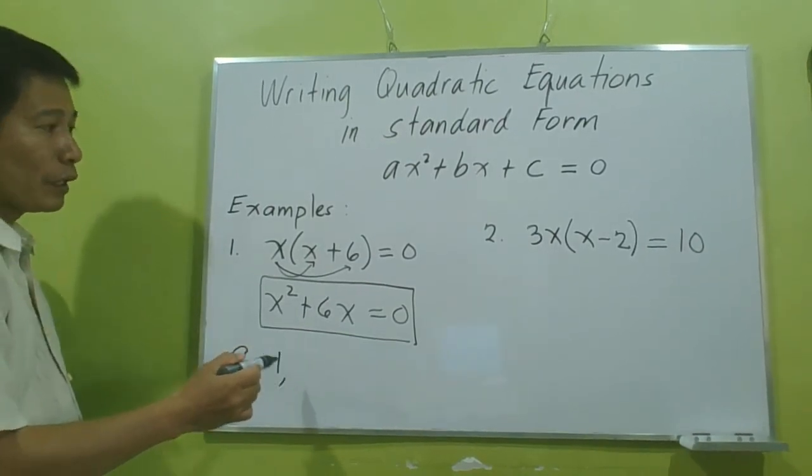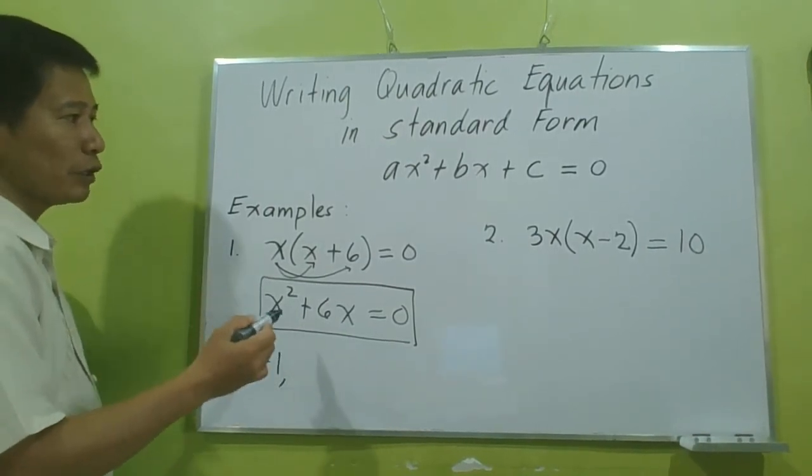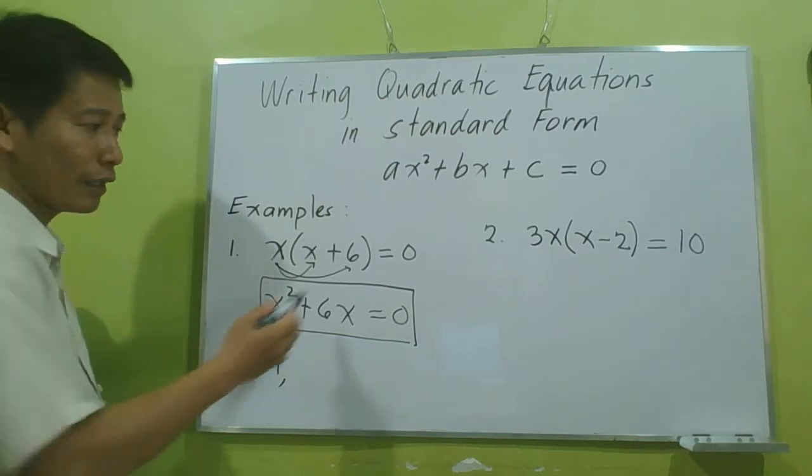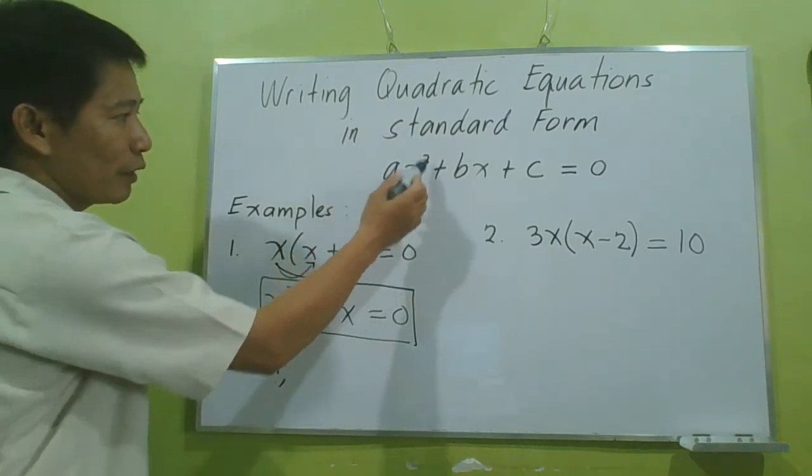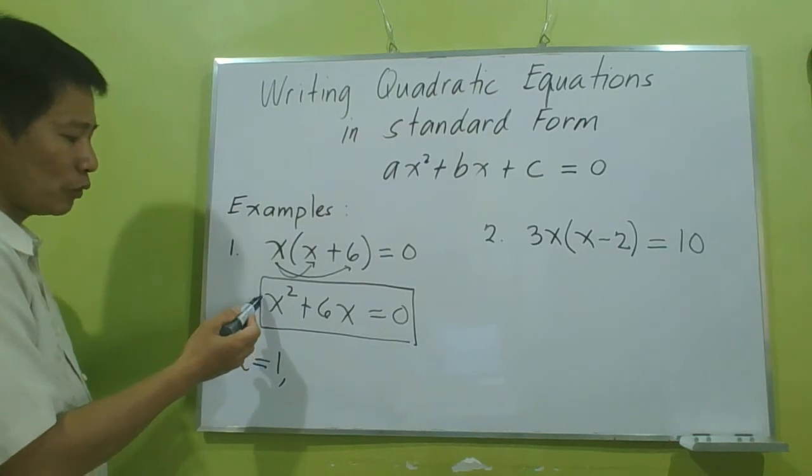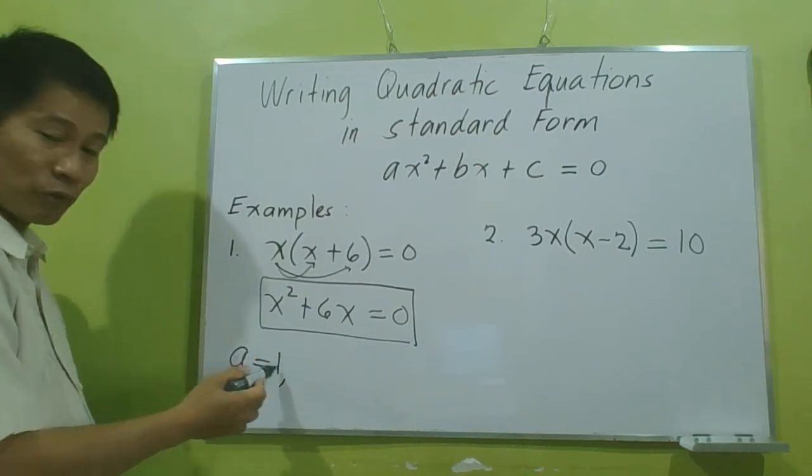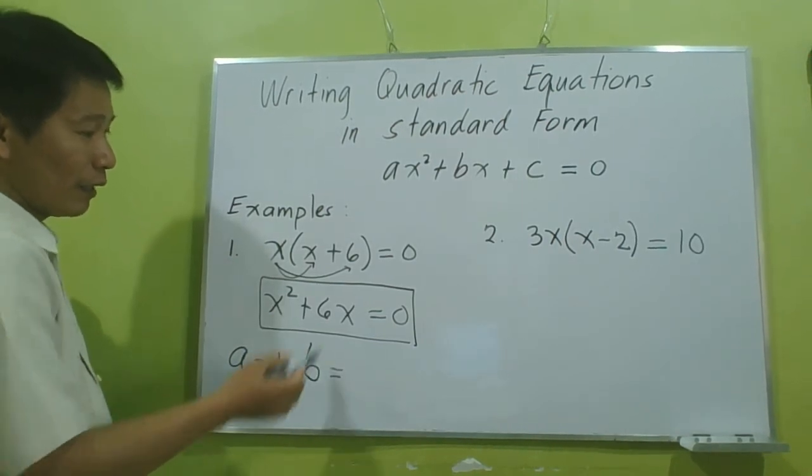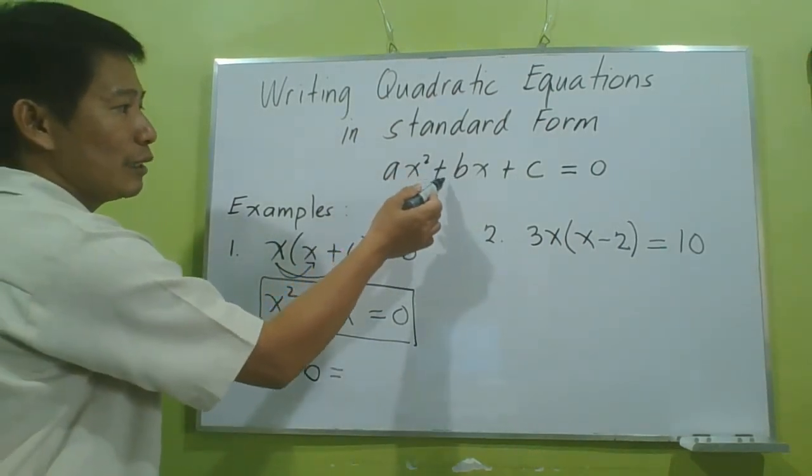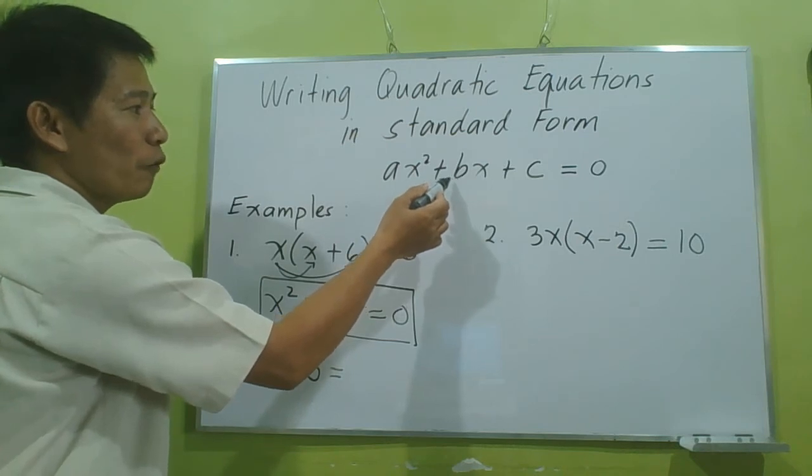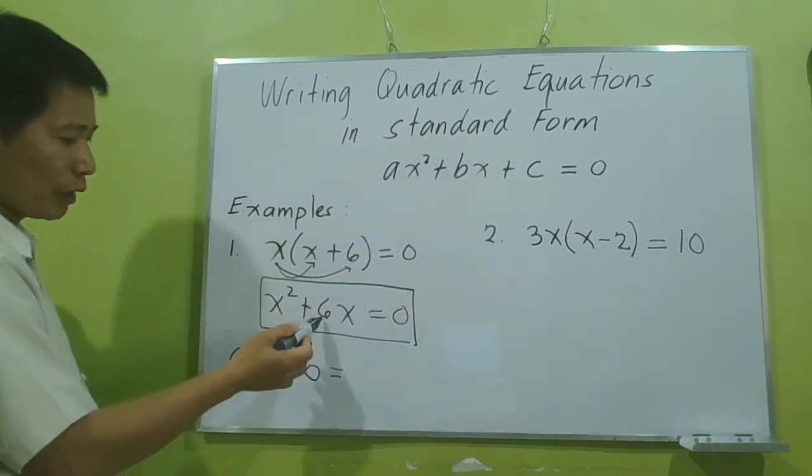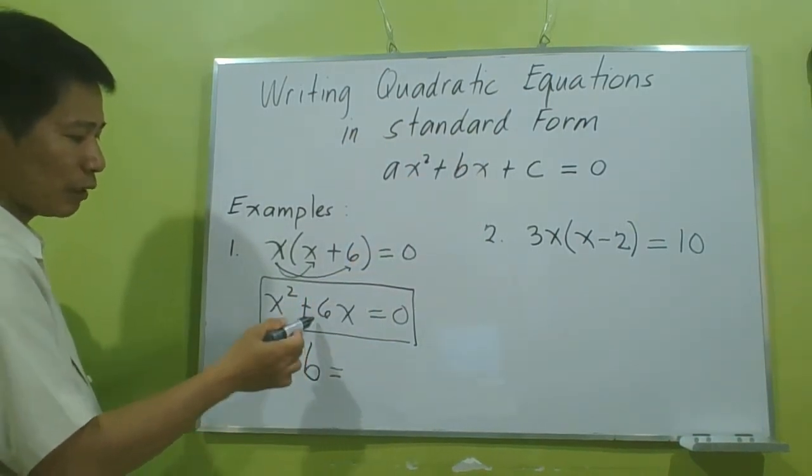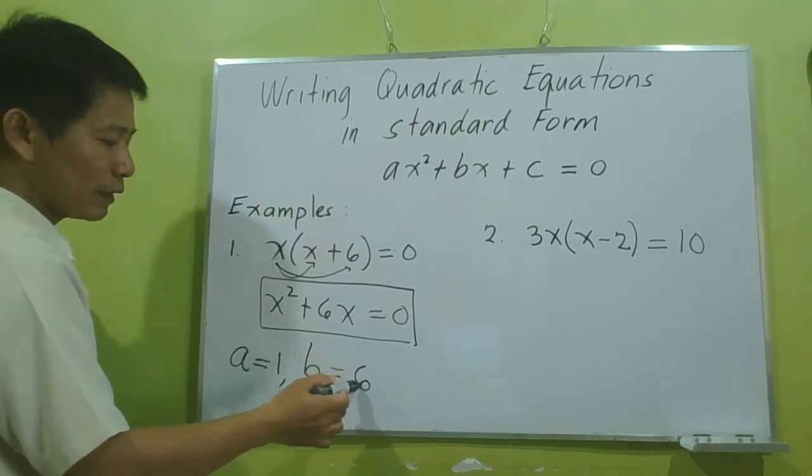Remember, if there is no numerical coefficient in the quadratic term, the value of A is 1. For the value of B—remember, B is the numerical coefficient of the linear term—in our equation here, B is equal to positive 6.